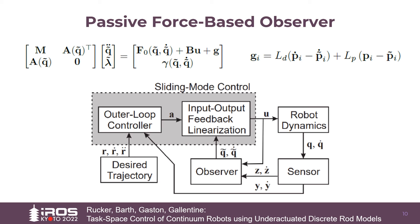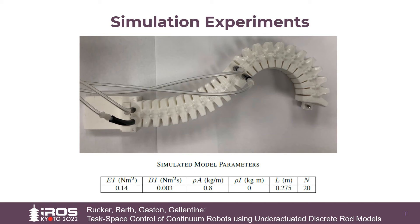The overall task space trajectory control structure is shown in this block diagram. We tested our approach in simulation based on a two-segment pneumatic soft continuum robot. Parameter values were taken from a physical prototype. Using the two control pressures, we control the end effector position along a desired trajectory where the observer only has access to the sensed tip position.